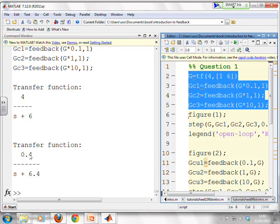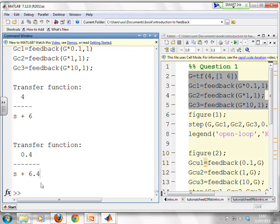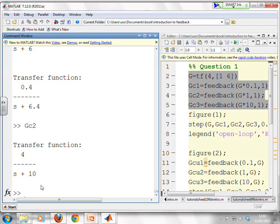So you see GC1, 0.4 over 6.4, as you expected. As you increase the gain, you get 4 over s plus 10. As you increase the gain, 40 over s plus 46.